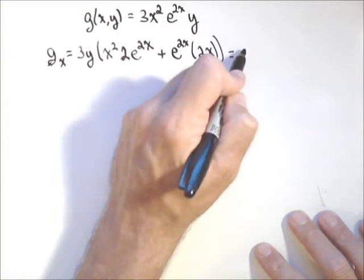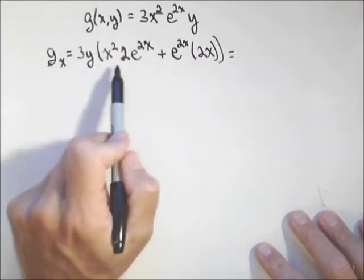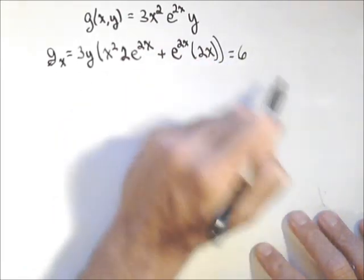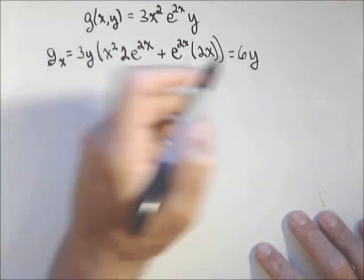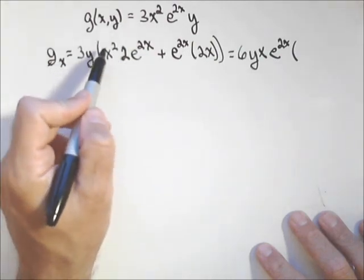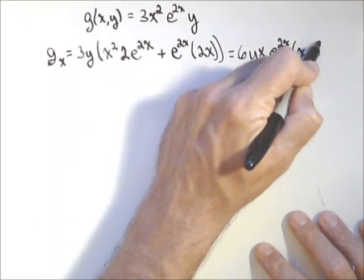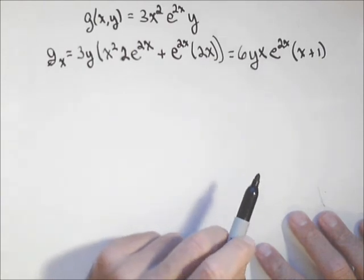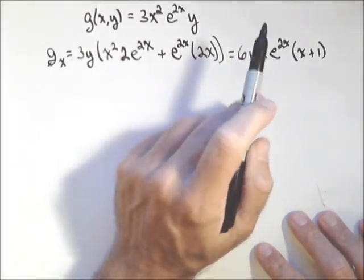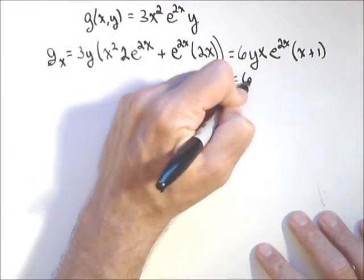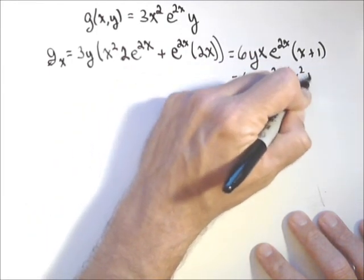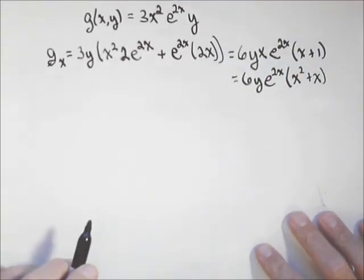We can simplify a little bit. What can we pull out? We can pull out a two, an x, and an e to the two x. So pulling out a two makes that a six y — six y, x, e to the two x, times x plus one. Now, we're going to have to take the second-order partial with respect to x, so it might be easier to multiply the x back through and leave it as six y, e to the two x, times x squared plus x. That saves a little bit of work on our product rule.